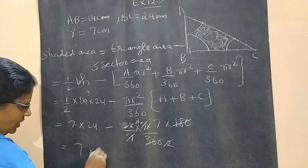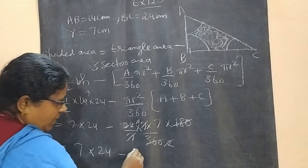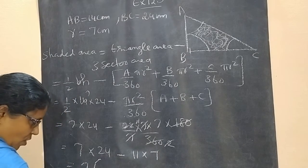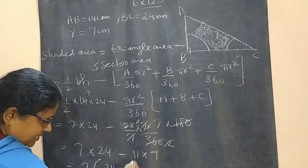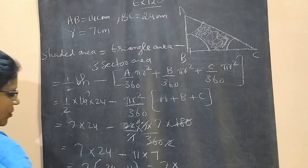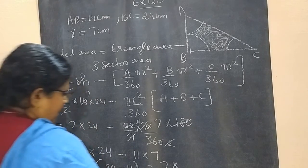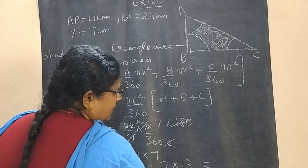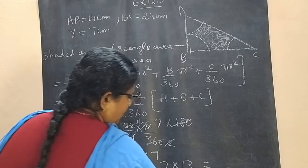So, we are getting 7 into 24 minus 11 into 7. So, 7 is common. 24 minus 11, we will get 7 into 24 minus 11 is 13. So, 13 into 7 we are getting.